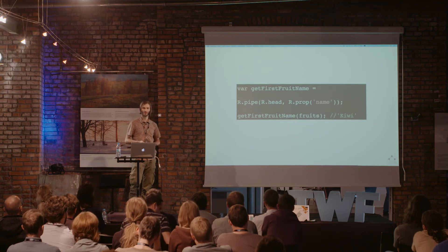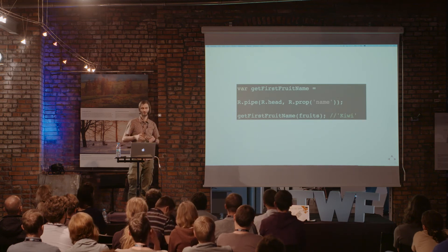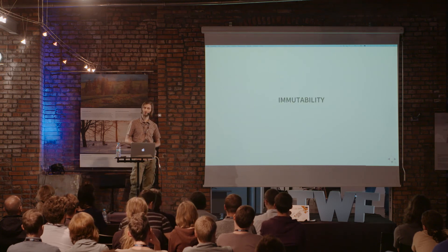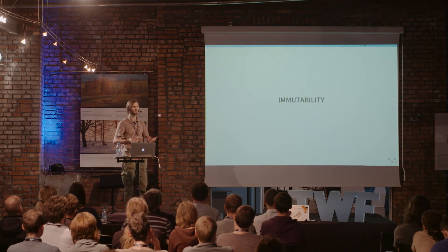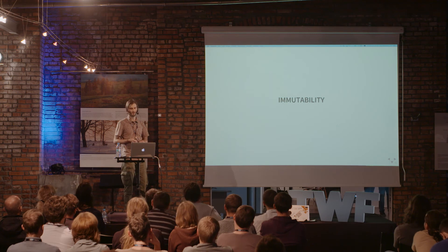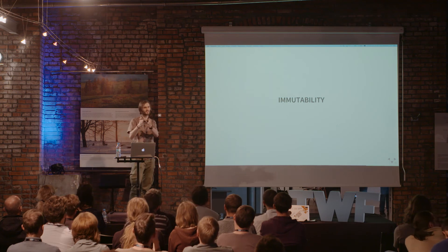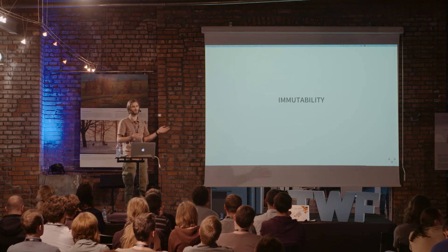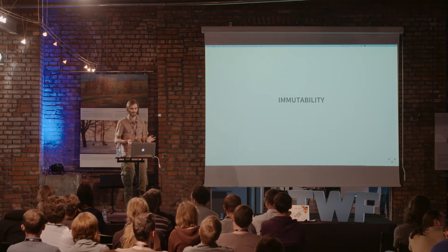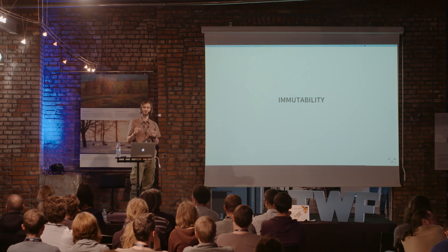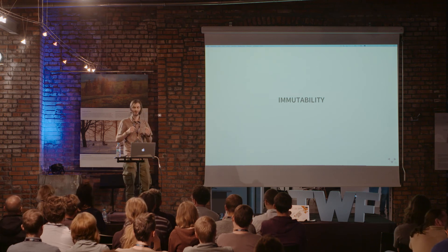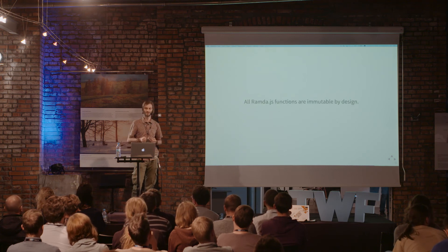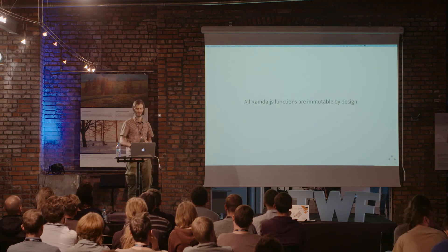If you are not used to reading code from right to left, you can use the pipe function as well. Our last stop is immutability. How many times have you found a bug where some function was mutating data being used by another function in a completely different part of the code accidentally? That's exactly what we are trying to avoid in functional programming, and the good news is all Ramda.js functions are immutable by design.